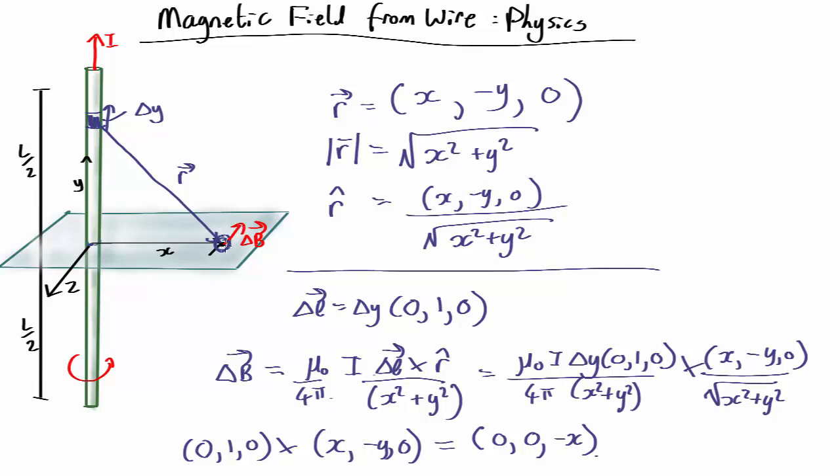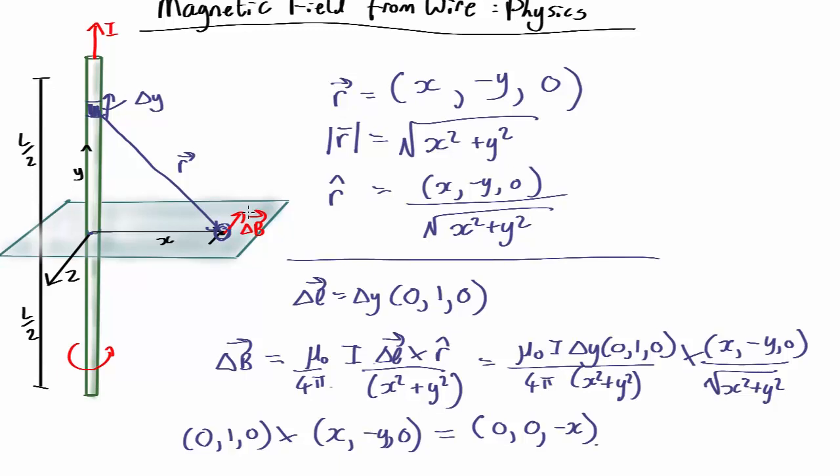In fact, no matter where our y is, it's always going to point in that direction. So it's going to make adding up a bit simpler because all the magnetic field components due to any bit of the y are pointing in the same direction.